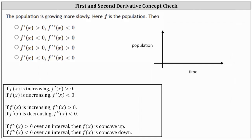If f of x is increasing, then the first derivative is positive. If f of x is decreasing, then the first derivative is negative. If the first derivative is increasing, then the second derivative is positive. And if the first derivative is decreasing, then the second derivative is negative.